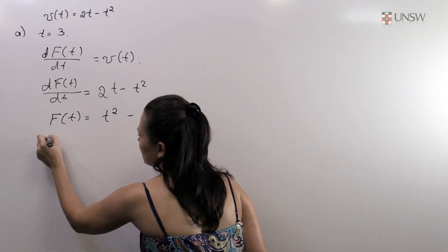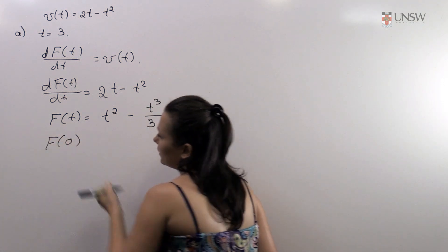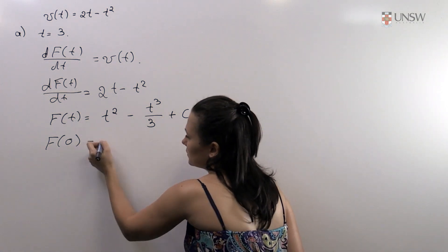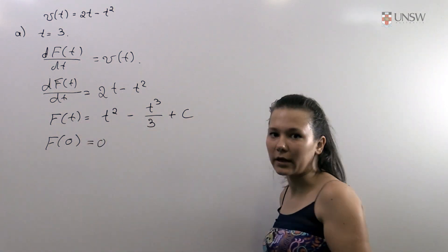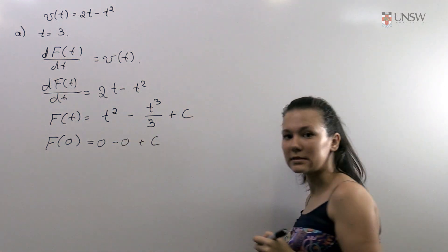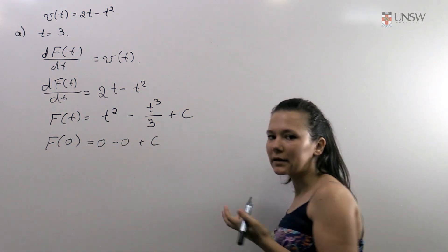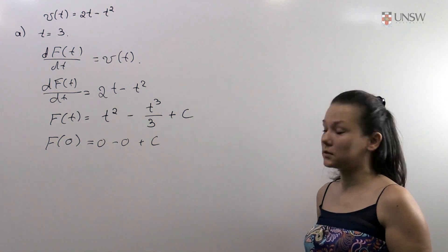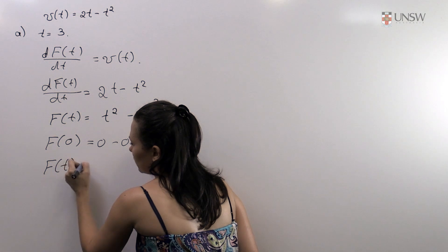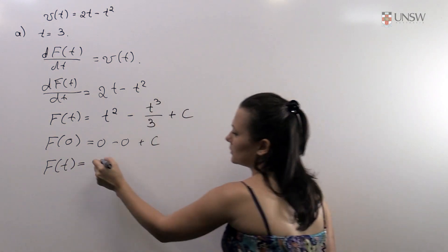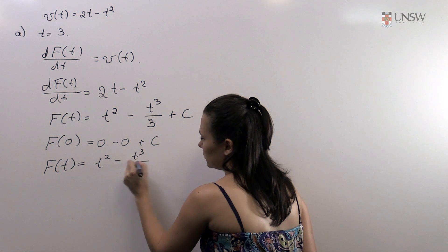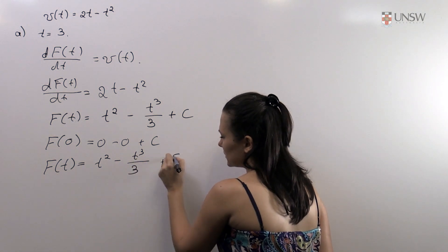To find the constant we substitute t equals zero. So f(0) equals zero squared minus zero plus the constant c, which gives us c. We cannot find this constant because it's unknown, but we can write our equation of displacement as t squared minus t cubed over 3 plus f(0).